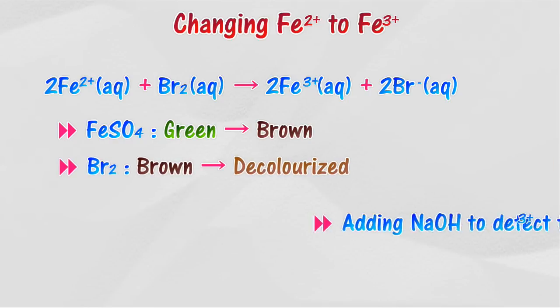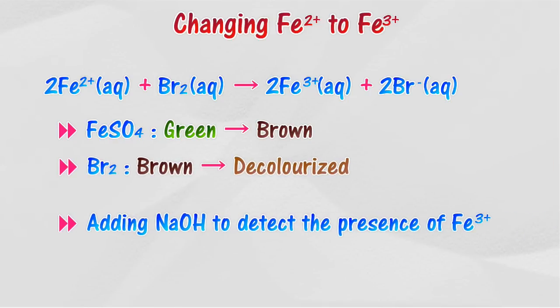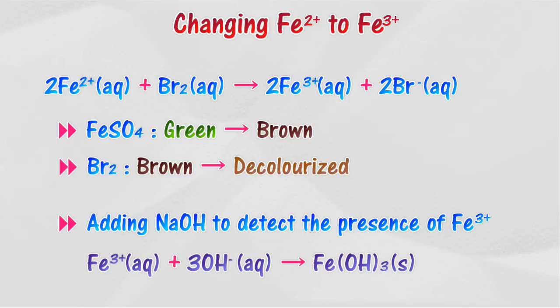The presence of Fe3+ ion as a product of the redox reaction can be detected by adding sodium hydroxide solution. A brown precipitate, Fe(OH)3, is produced.